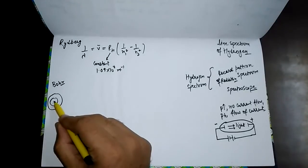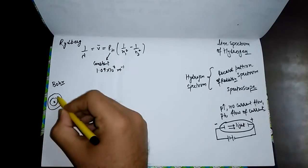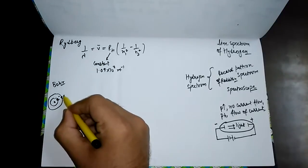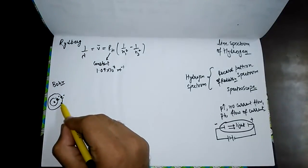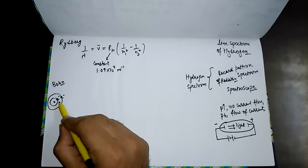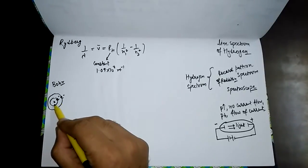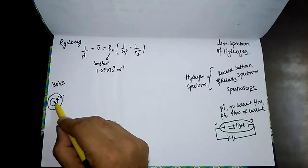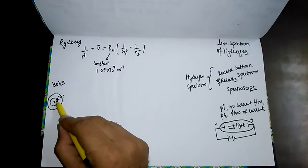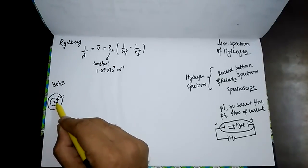The electron tends to stay close to the nucleus. If an electron is revolving around the nucleus, it has a tendency to remain as near to the nucleus as possible. The lowest energy state is called the ground state — when the electron is in its actual shell, we call that the ground state.